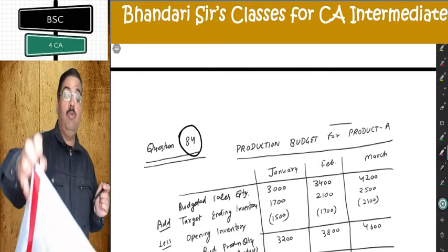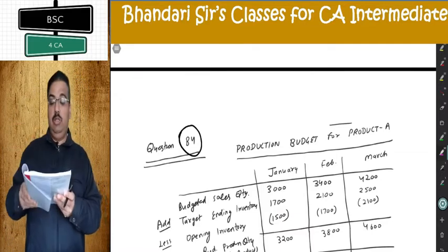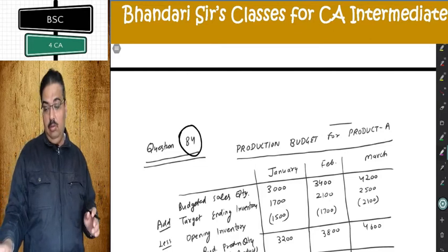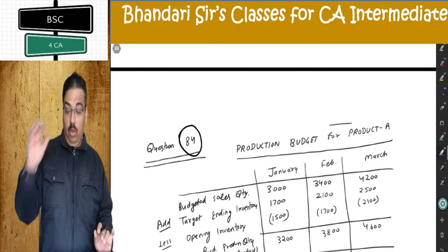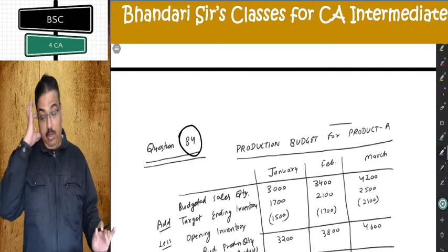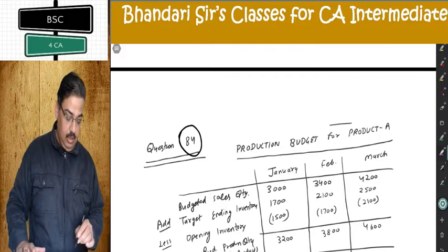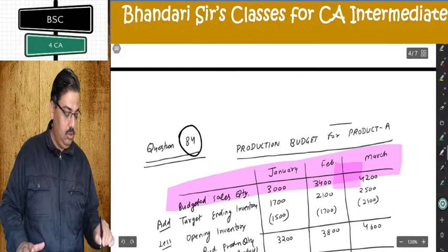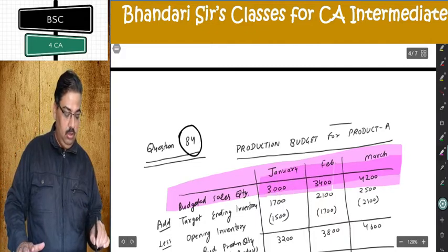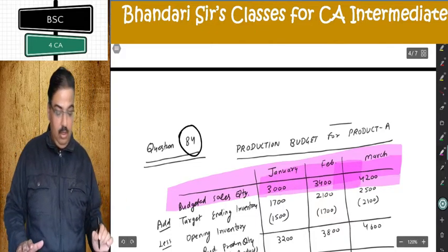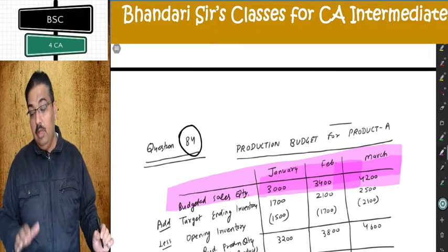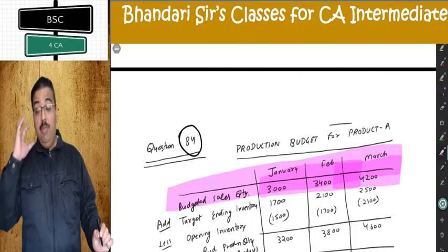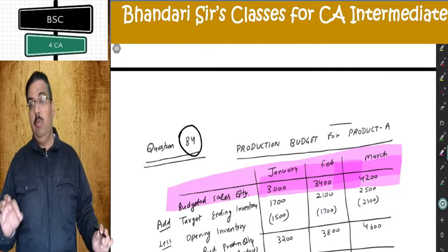Product A is what I am doing. You are given the budgeted sale quantity. In the table, the upper row is for product A. Budgeted sale quantity for January, February, and March is given in the question: 3,300, 3,400, and 4,200. Add closing stock — I read point B which tells me about closing stock.